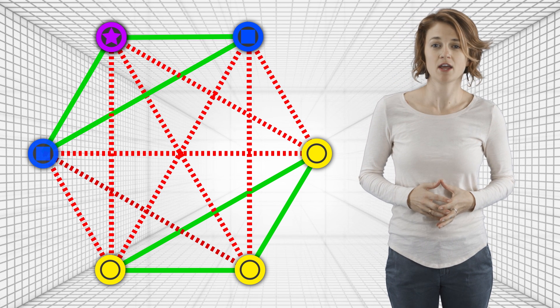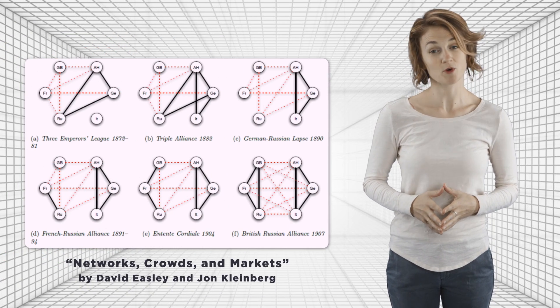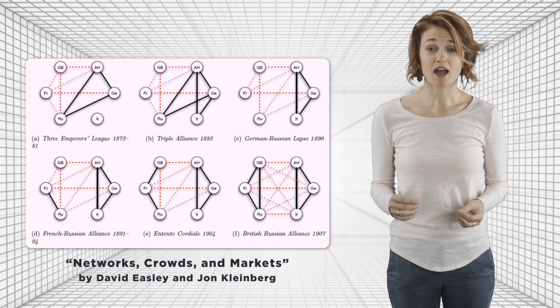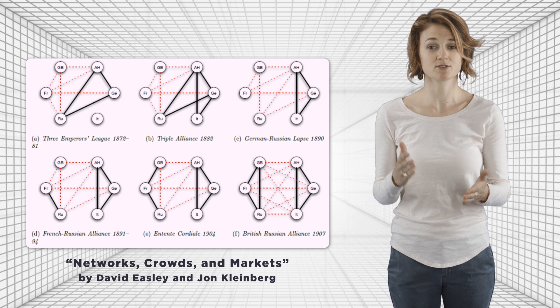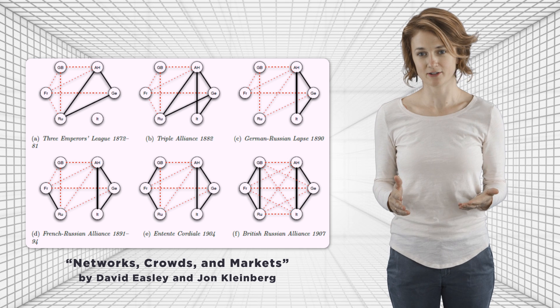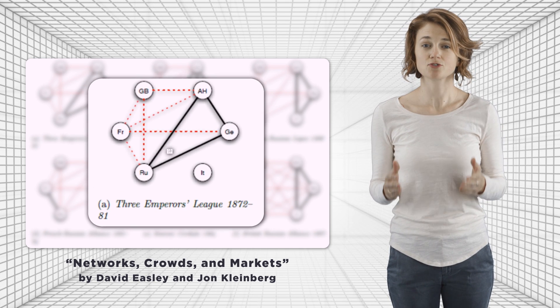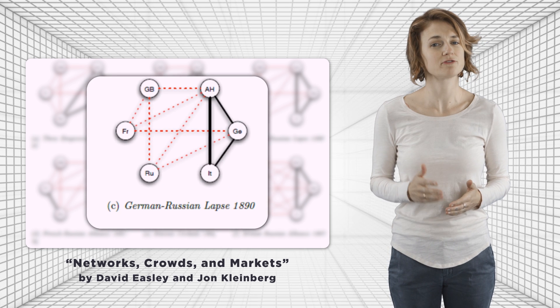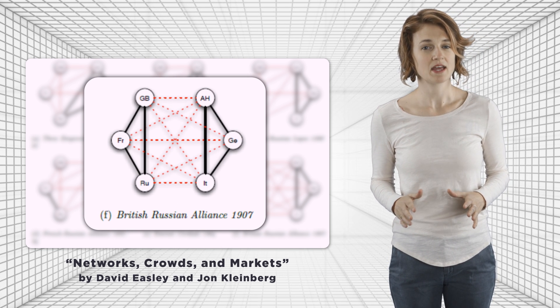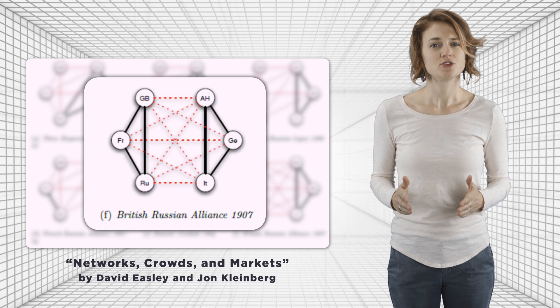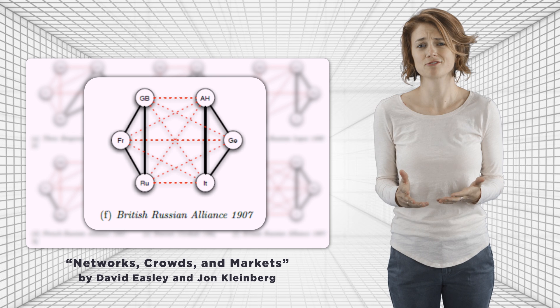The vertices of the network can represent things besides people, like countries. Here's an example from World War I. Each graph represents the changing relationships between Great Britain, France, Russia, Italy, Germany, and Austria-Hungary, as they shifted alliances. Each graph is structurally unbalanced, until finally they split into two groups, a balanced configuration. In this balanced state, no one could easily be persuaded to change alliances, which led to war.